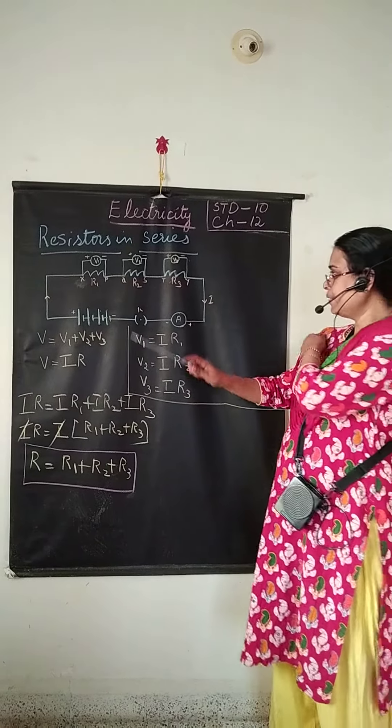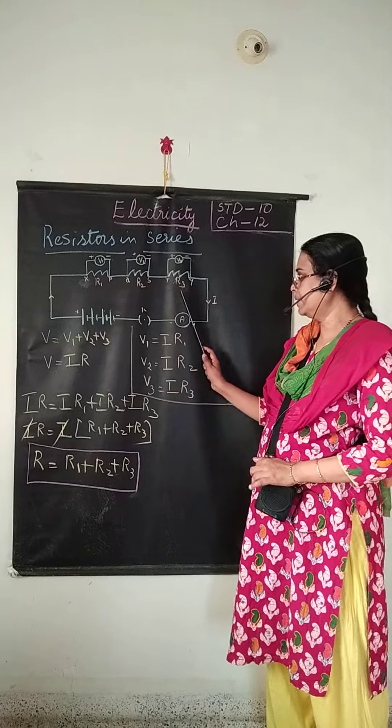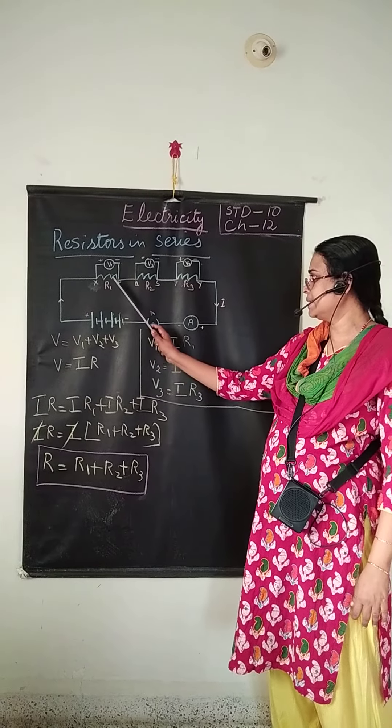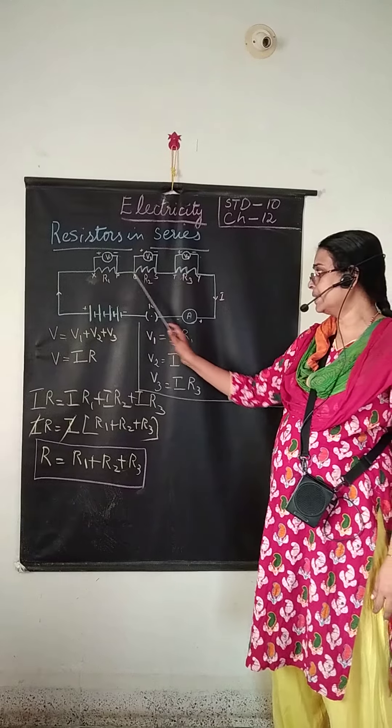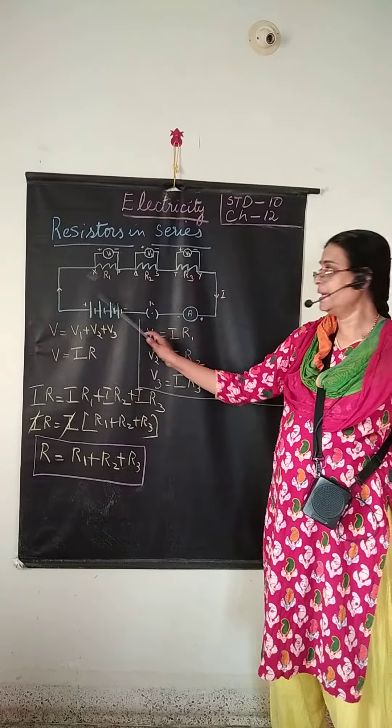Now you can see over here the circuit diagram. In this circuit diagram R1, R2 and R3 are the three resistors which is connected in series.